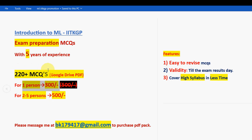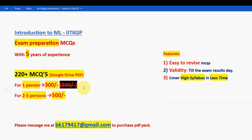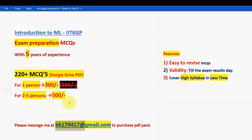So for one person it is 300 rupees; for two to five persons taking it in a group combinedly, it is 500 rupees. The email ID to purchase is bk179470 at gmail.com. Remember, only if you are confirmed to make the payment then mail us, because many genuine students are mailing us and we have to give priority to everyone.